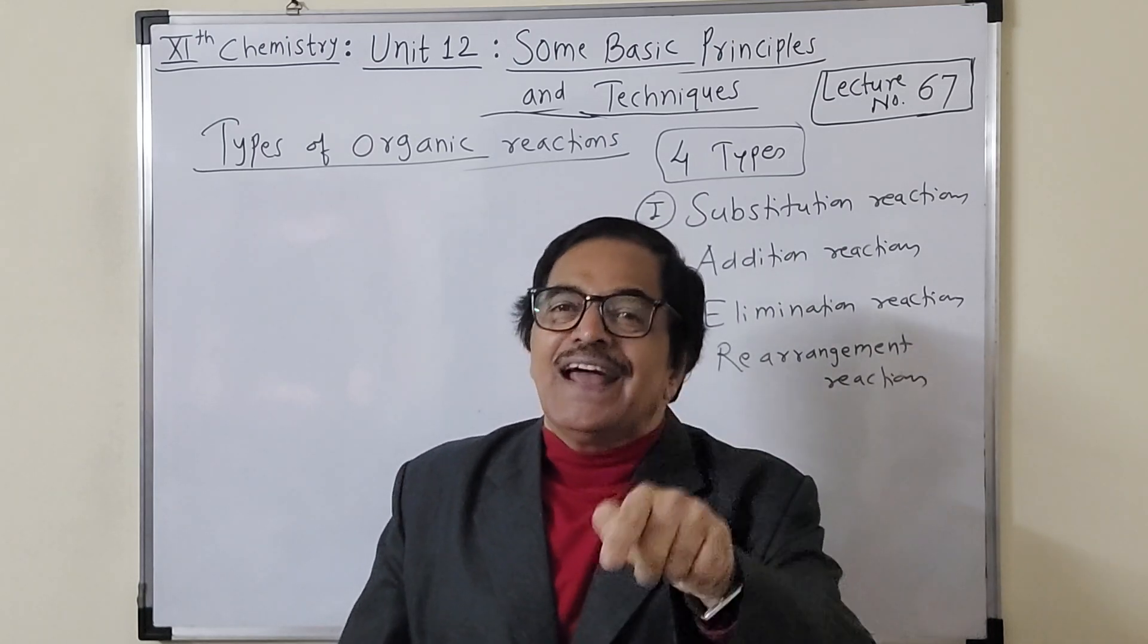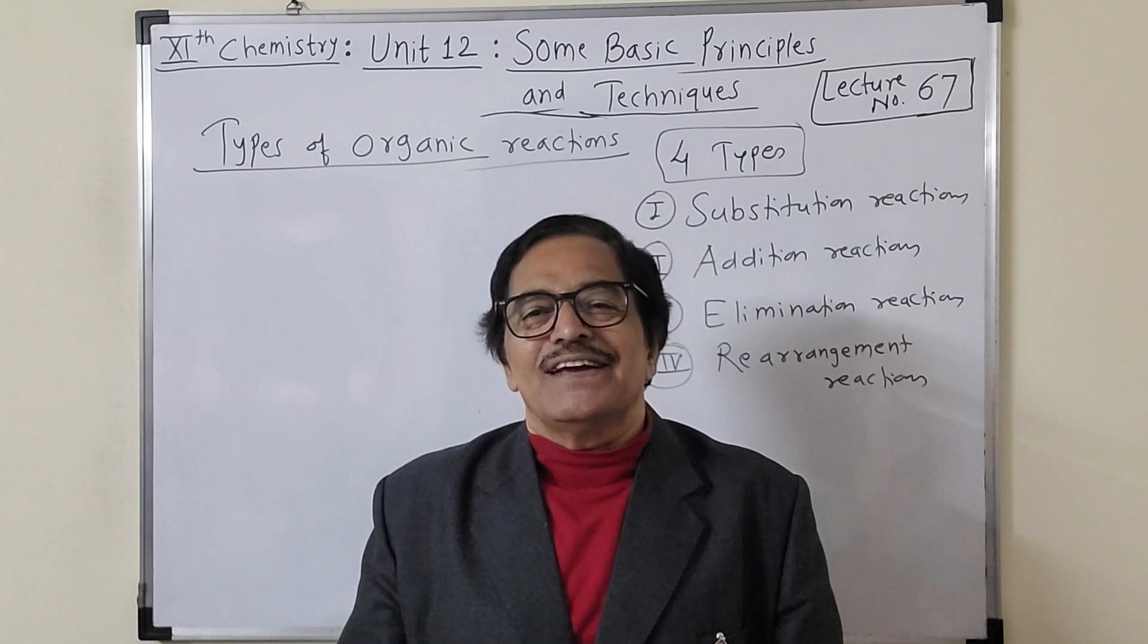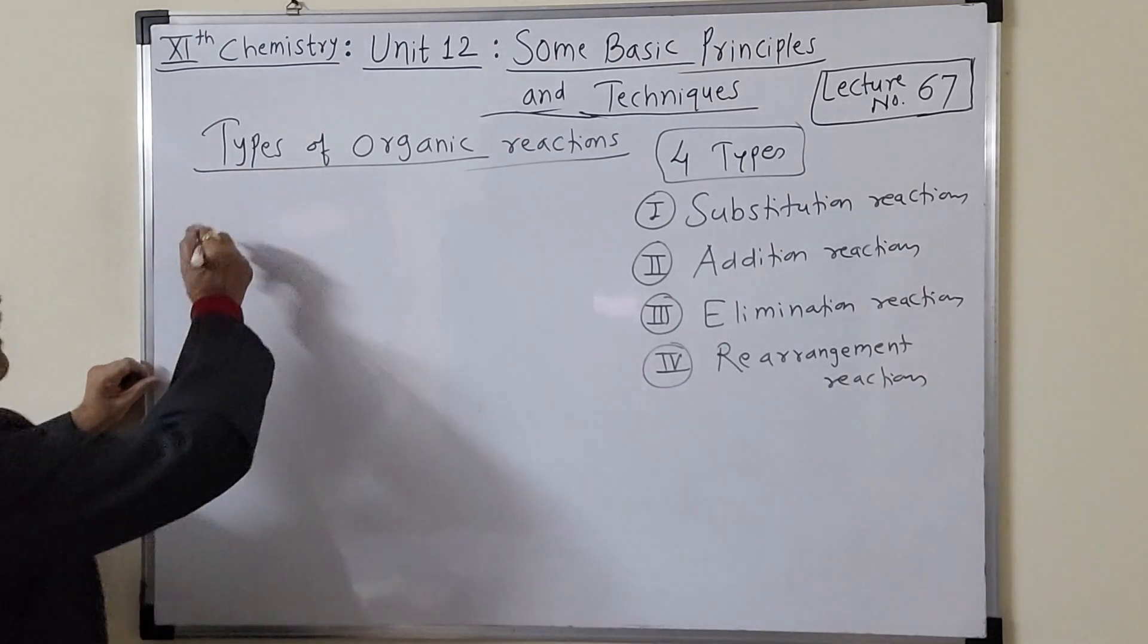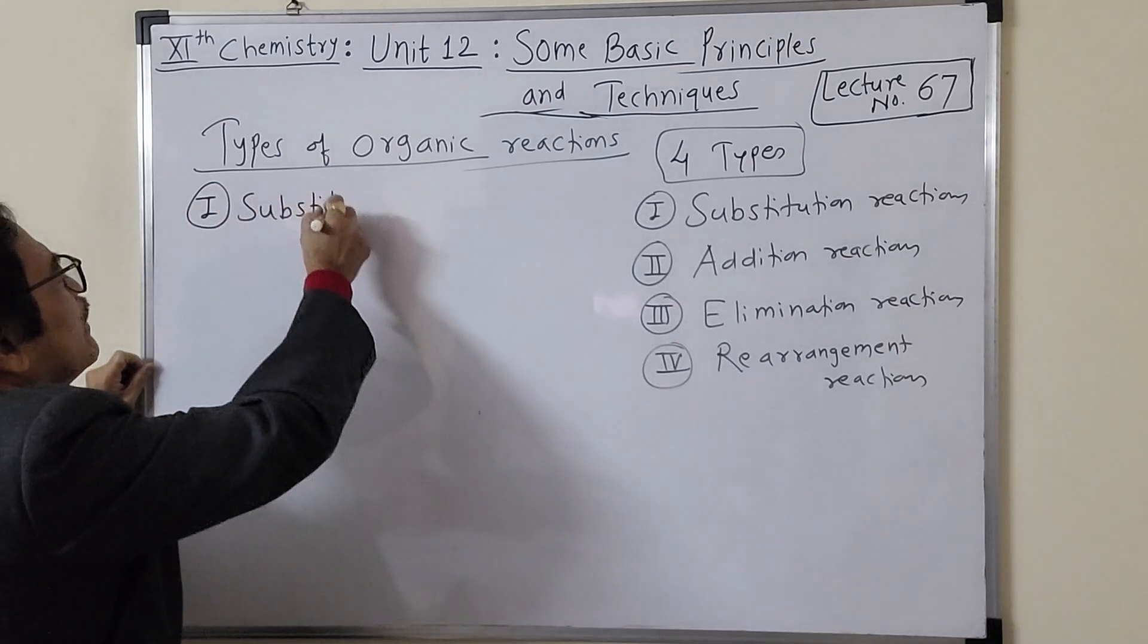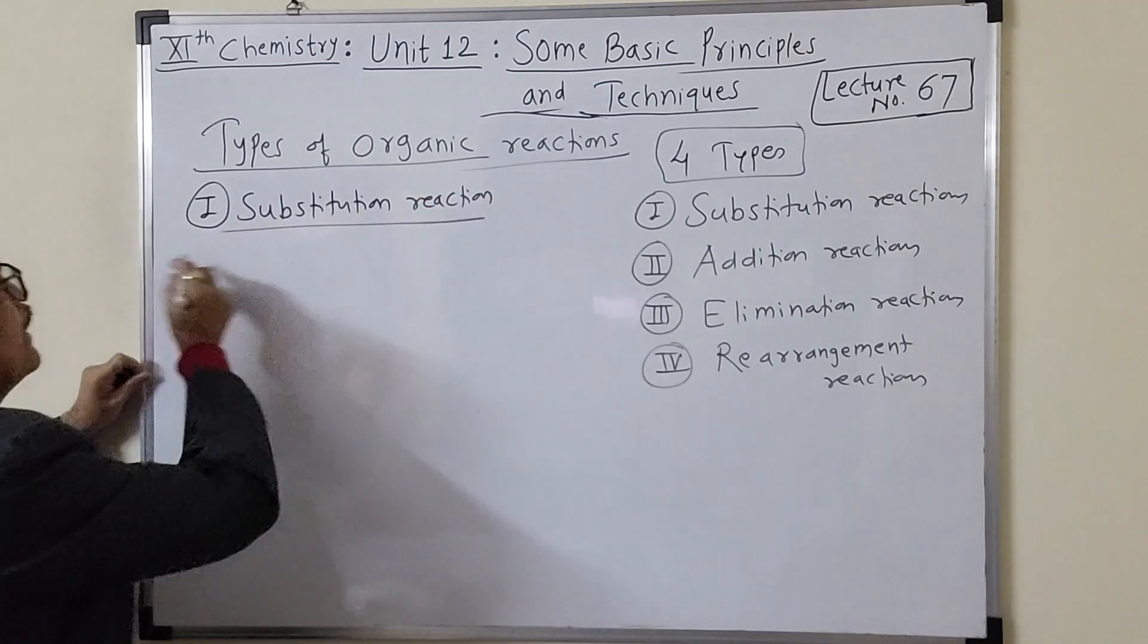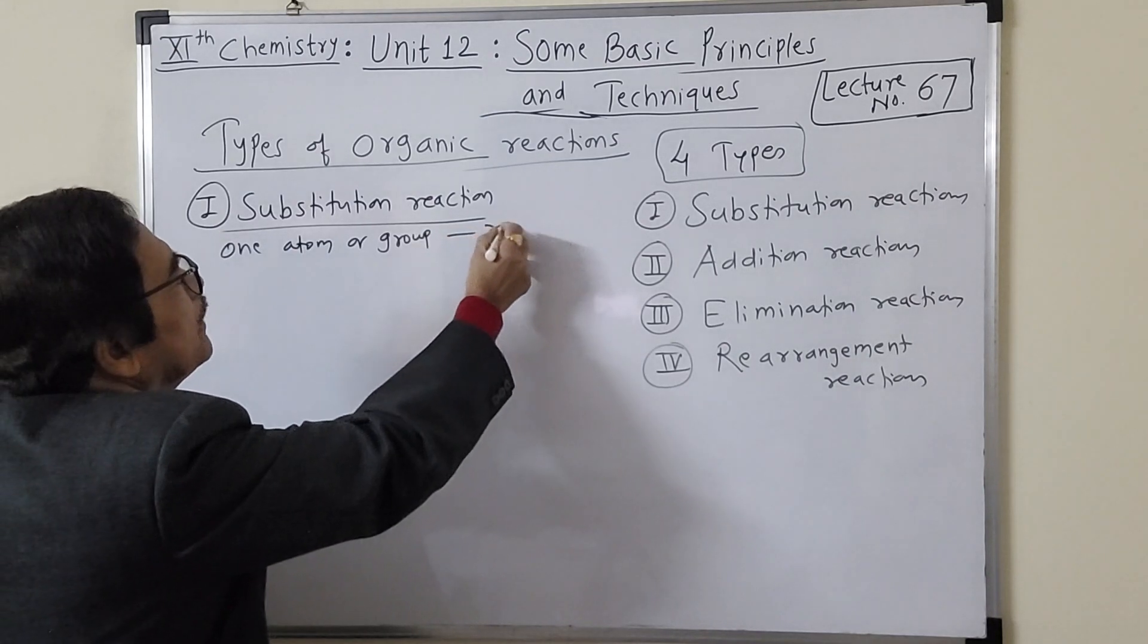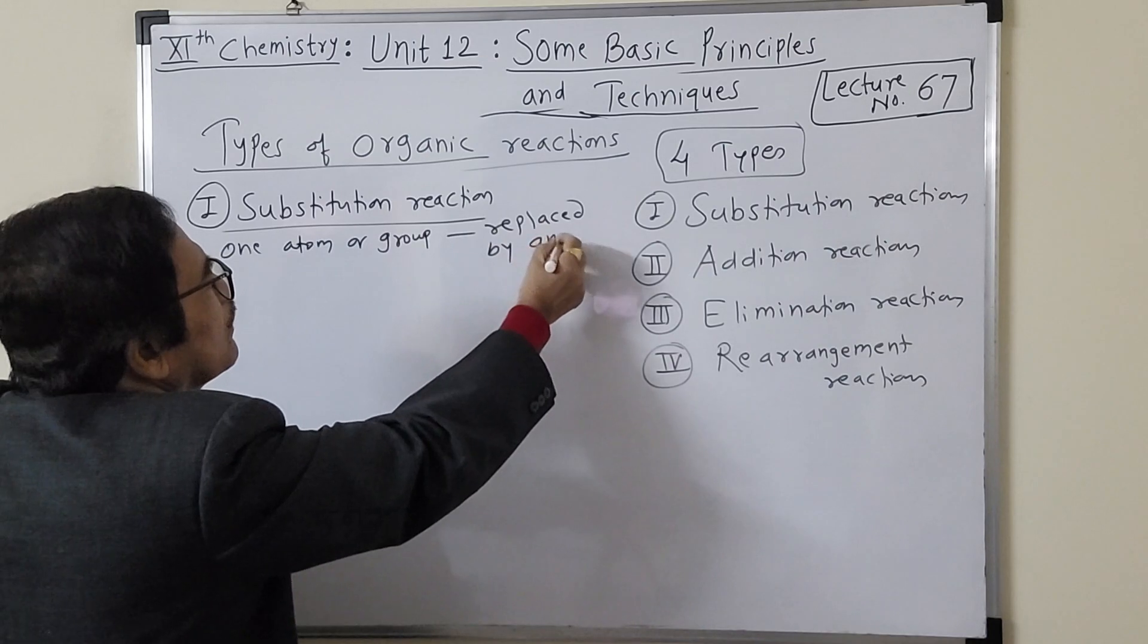All these four categories of reactions are there in organic chemistry and they are also there in our life. This is why I love my subject very much. Now what are these reactions with examples we shall learn. A substitution reaction is that in which one atom or group of atoms gets replaced by another atom or group of atoms.